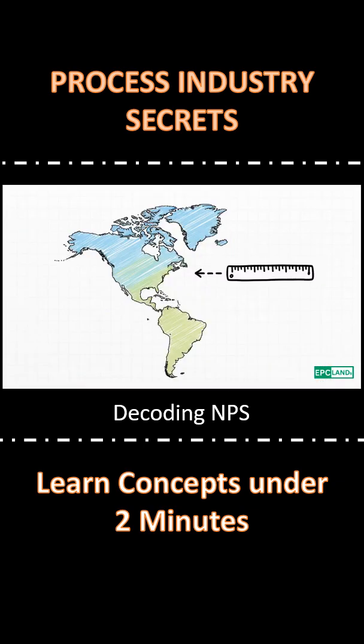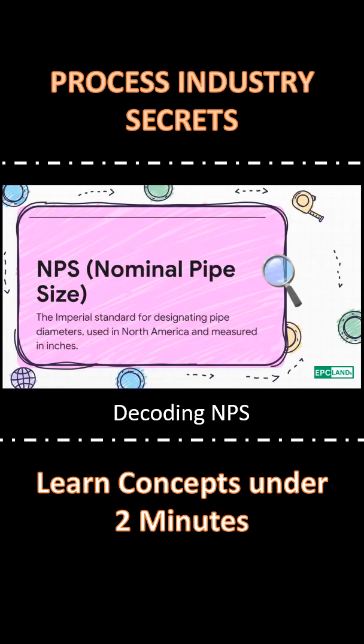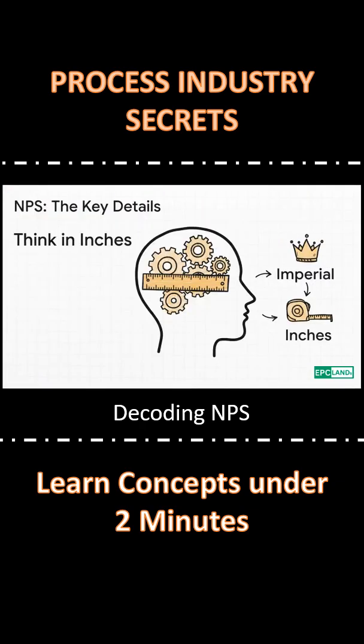First up is NPS. This is the standard you'll see all over North America. NPS stands for Nominal Pipe Size, and that word 'nominal' is key — it's a name, not a measurement. So the main takeaway: when you see NPS, just think inches. Simple as that.